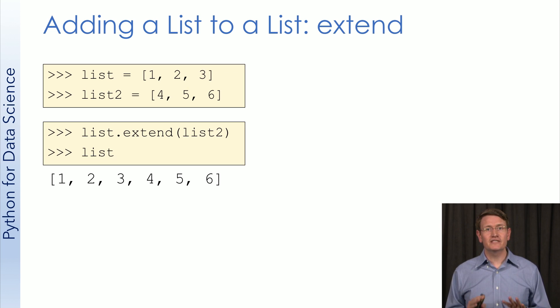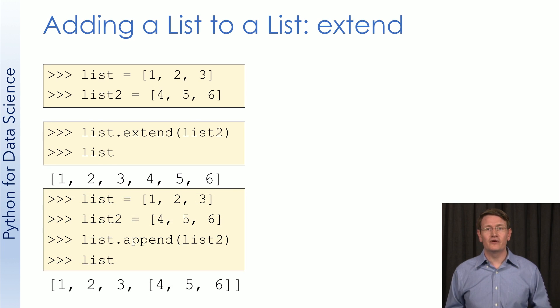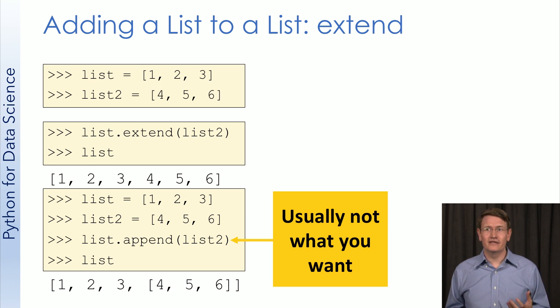Be careful not to mix up append and extend. Append adds an element to the end of the list. Extend appends all the elements from one list into the other. If you accidentally use append with a list parameter, this is what happens. You get a list of four elements. The first three are integers, and the last is a list of three integers. This is a pretty common mistake, so be careful.